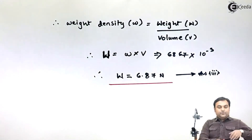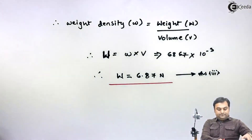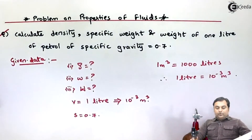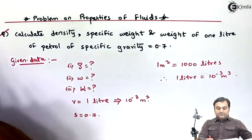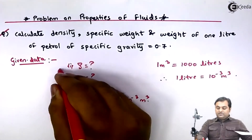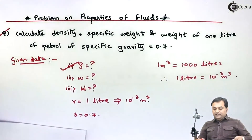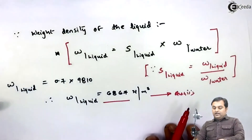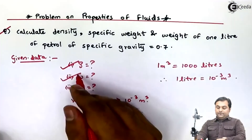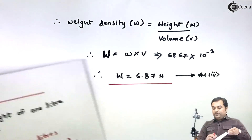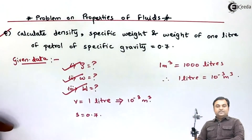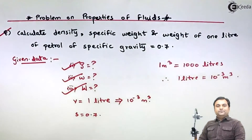In summary, there were three things asked in this problem. First, mass density — our answer was 700 kg per meter cube. Second, weight density — our answer is 6867 newton per meter cube. Third, the weight of the liquid — we found it to be 6.87 newton. With this, the problem on properties of fluid is complete.